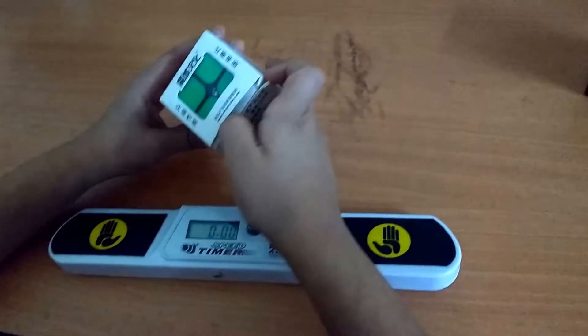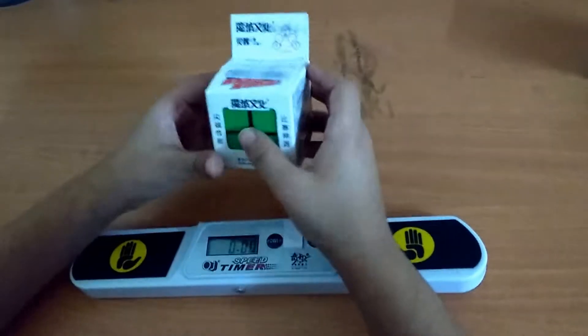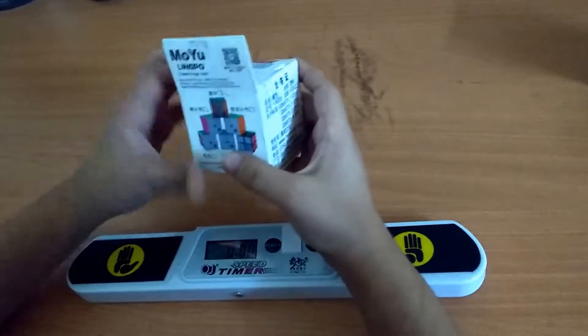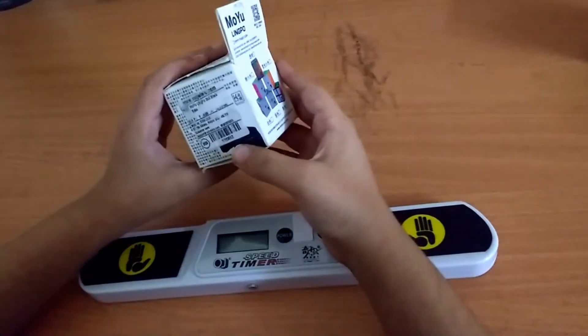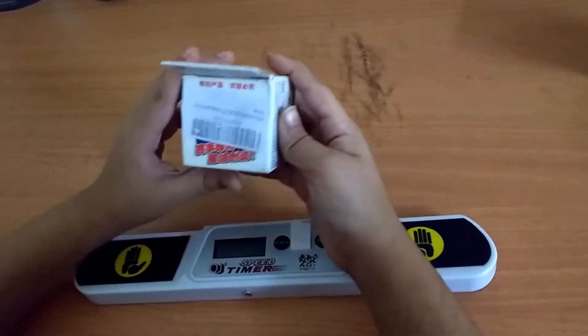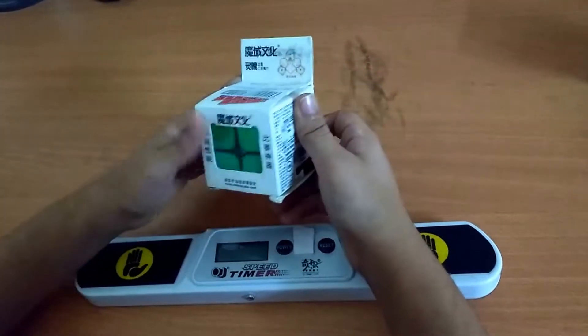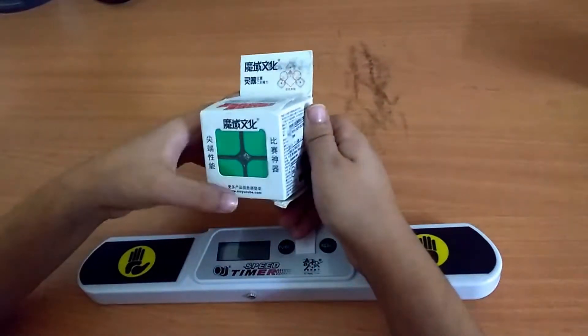The first thing is that it comes in the Moyu box with the other variants of the cube displayed on the back, and also you get the other Chinese things written on the front, the website's name, and everything.